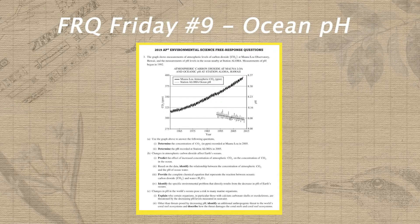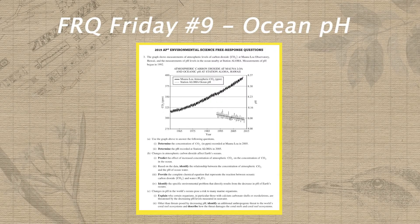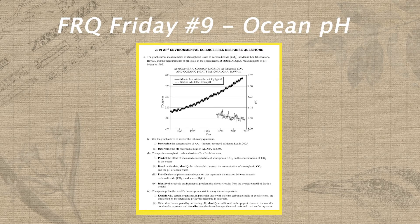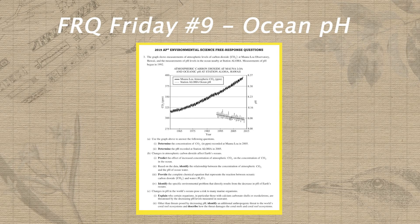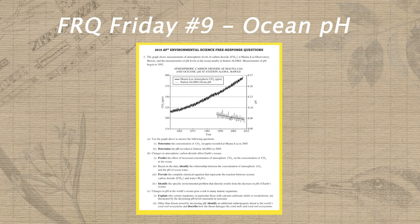Moving on from APES exam score projections, let's take a look at our final FRQ Friday prompt, which covers ocean acidification and comes to us from the 2019 exam. In the background for this FRQ, we have a graph showing measurements of atmospheric levels of carbon dioxide at Mauna Loa Observatory in Hawaii, as well as measurements of pH levels at the ocean nearby at Station Aloha.